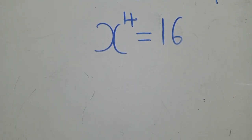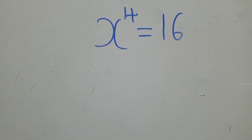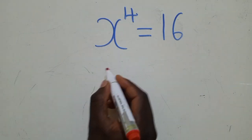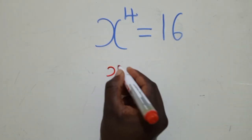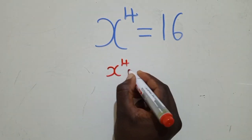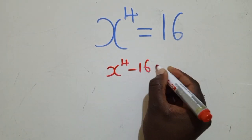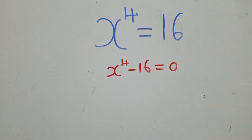Alright, the first step here must be to apply the difference of two squares. First, we put it in standard form and apply the difference of two squares. So, we shall have X power 4 minus 16 is equal to 0, like this. So, we've put it in standard form.